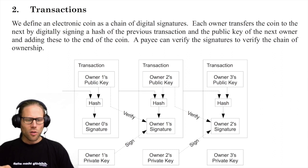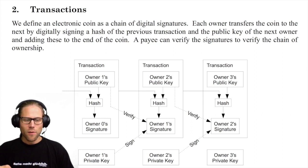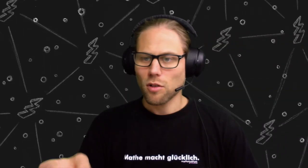"Each owner transfers the coin to the next by digitally signing a hash of the previous transaction and the public key of the next owner, and adding these to the end of the coin." A coin is a chain of digital signatures, and when somebody wants to transfer something, the transfer is added to the end of the chain. This has nothing to do with a blockchain, by the way.